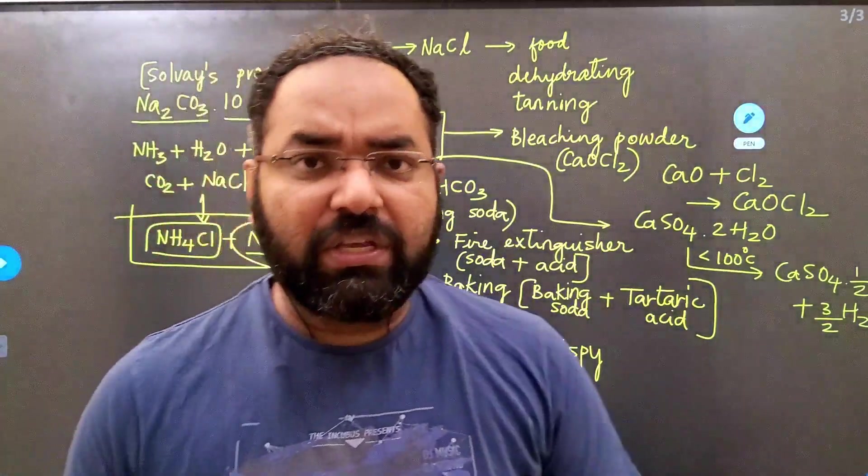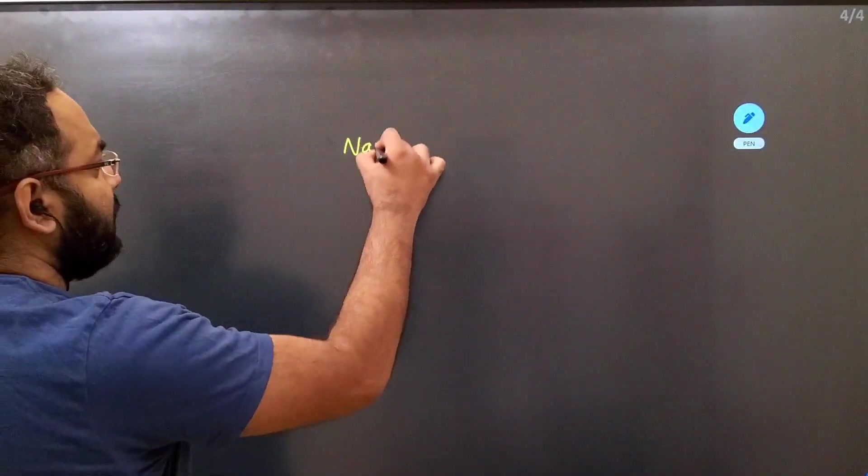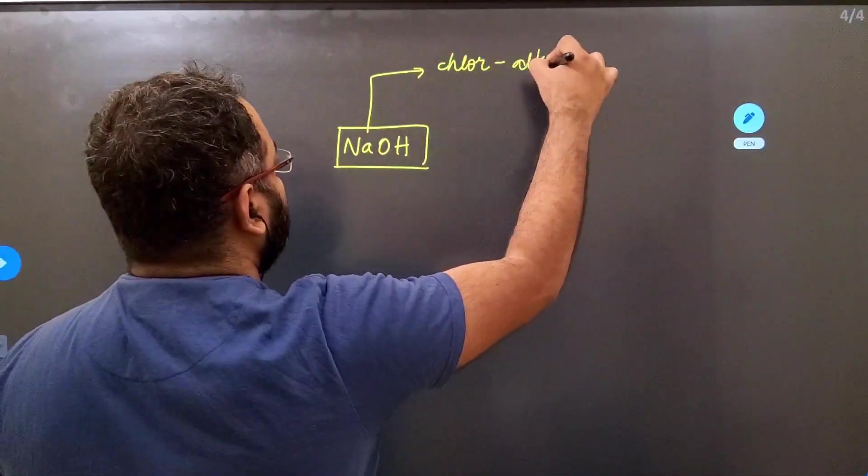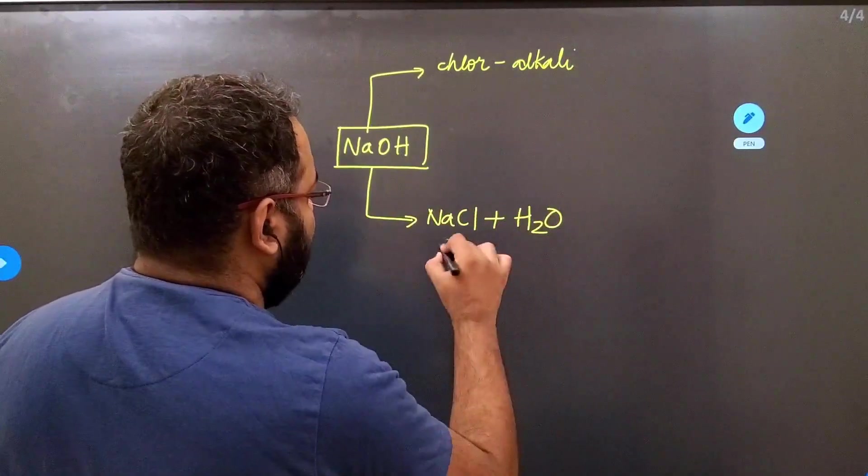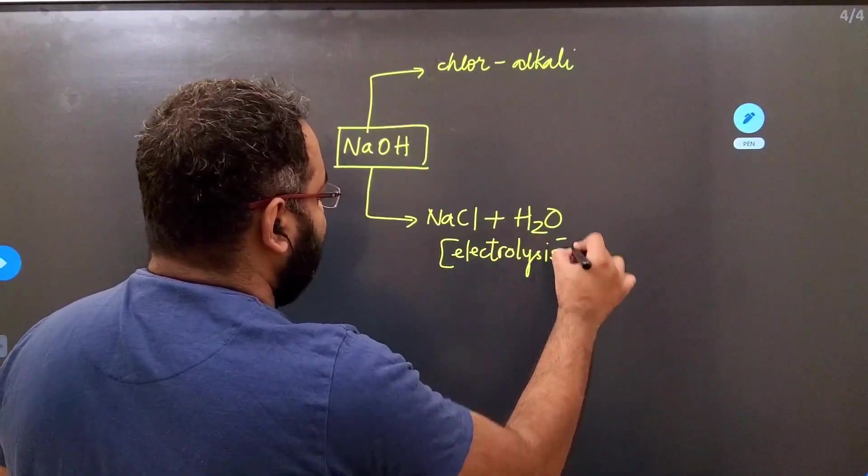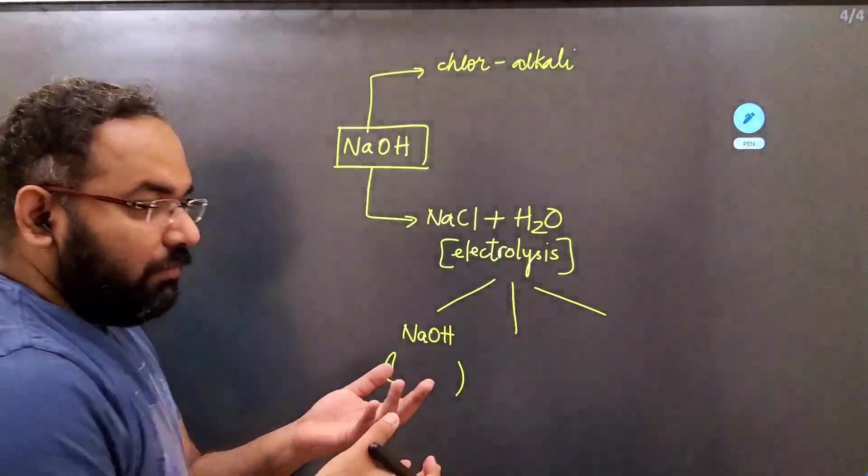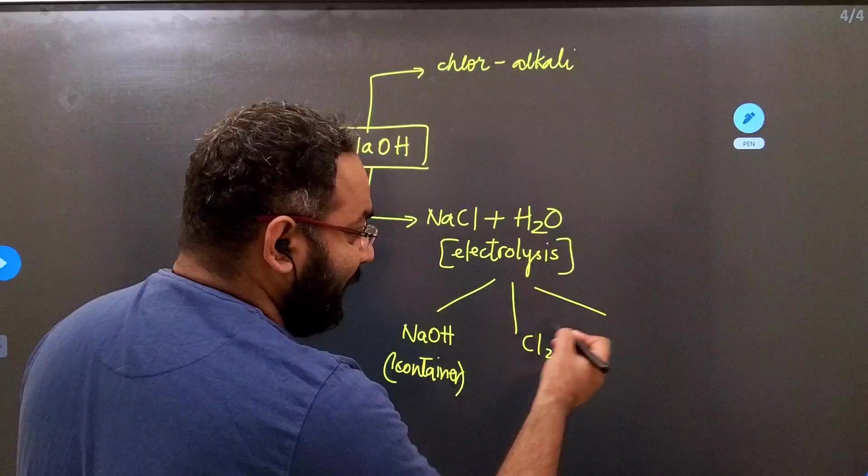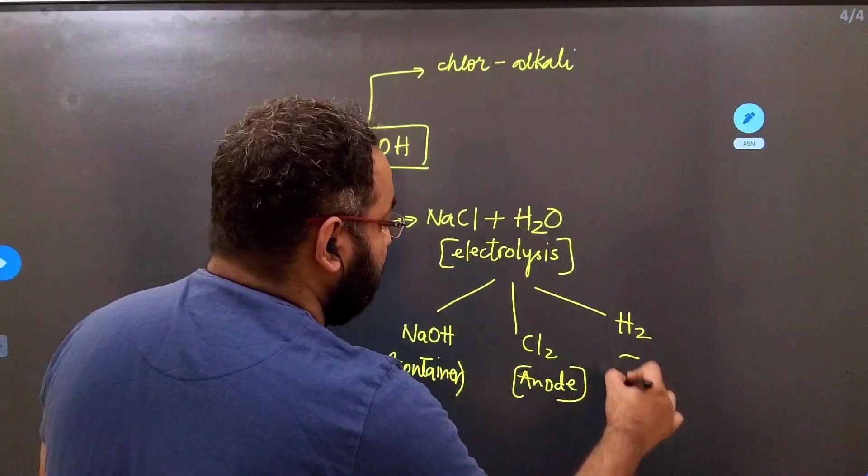The last thing that we have is to summarize the manufacture of sodium hydroxide by chloroalkali process. Whenever you manufacture sodium hydroxide by chloroalkali process, there are few things you need to remember. You need to use sodium chloride plus water and you need to pass direct current through it. It's a process called electrolysis. You get three products. The first product is sodium hydroxide, which will be formed in the container itself. Chlorine gas being negatively charged will be formed at the anode, and hydrogen gas being positive will be formed at the cathode.